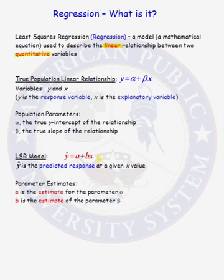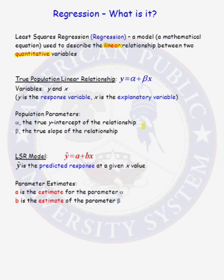Before we can talk about a model, we need to believe that there is a true linear relationship between our variables x and y. Variable y is called our response variable, and x is the explanatory variable. We have two parameters, alpha and beta. Alpha is the true y-intercept of the relationship, and beta is the true slope of the relationship. The explanatory variable is used to describe the response for variable y.